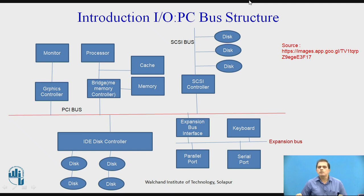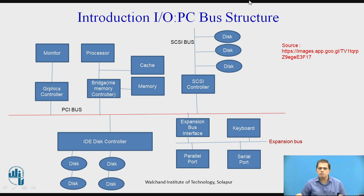With the local dedicated disk buses, we are having an expansion bus interface where we can have more ports, and with the help of those ports we can connect other peripheral devices such as a keyboard. The ports can be mainly categorized into parallel port and serial port, as shown in the diagram. This is the normal IO PC bus structure we are having in our computer system.